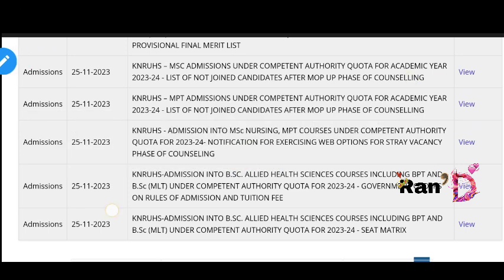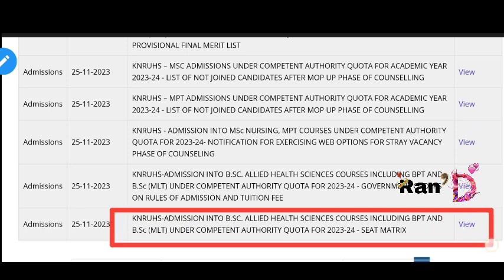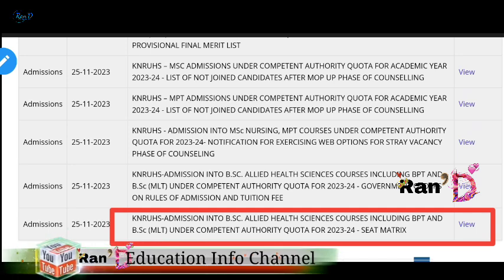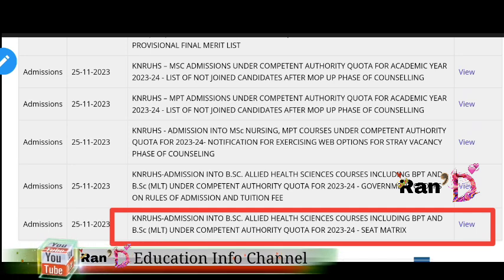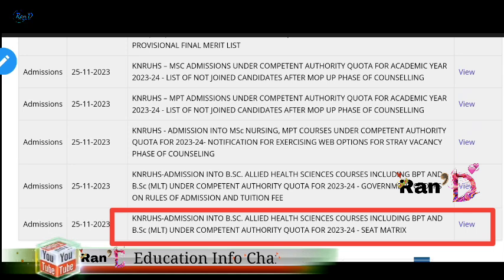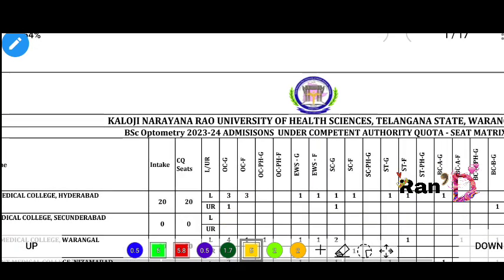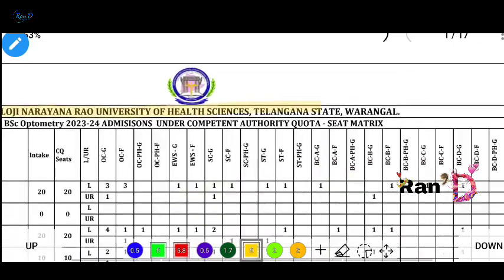Here we have K&L UHS submissions into B.S.E. Allied Health Sciences seat matrix for 2023-2024. You can click on the button and download it. Choose K&L UHS and click on the K&L UHS state.